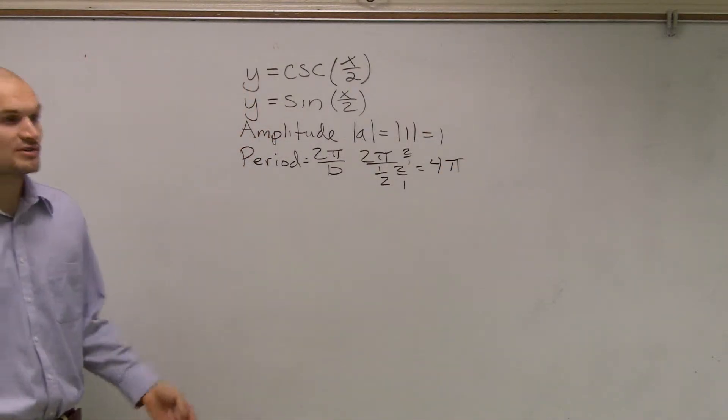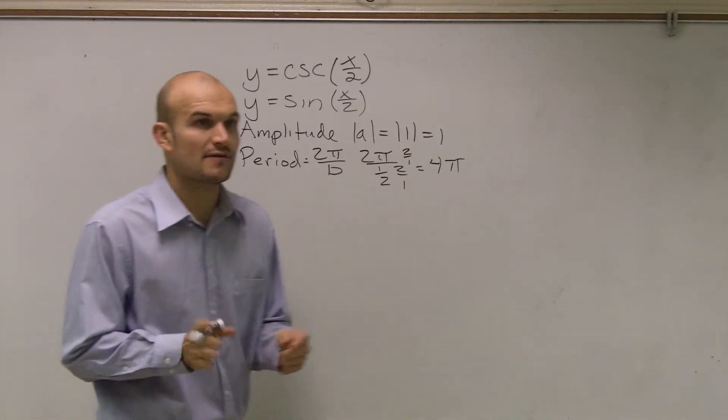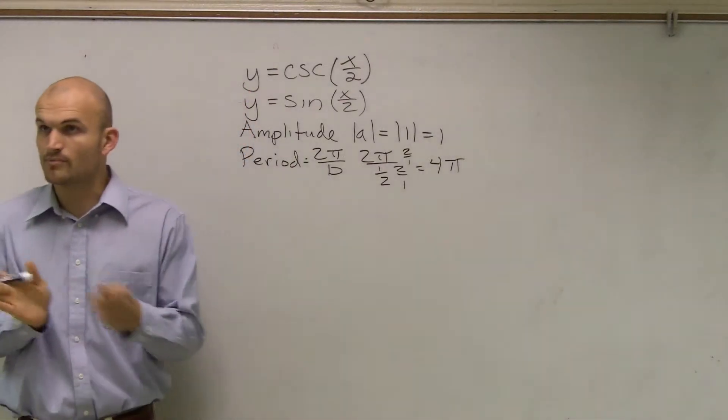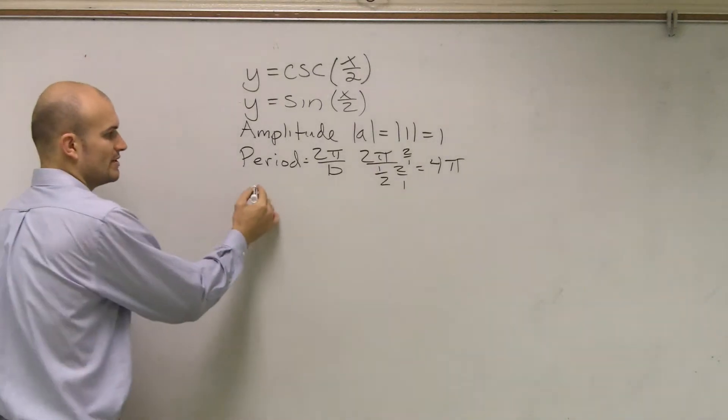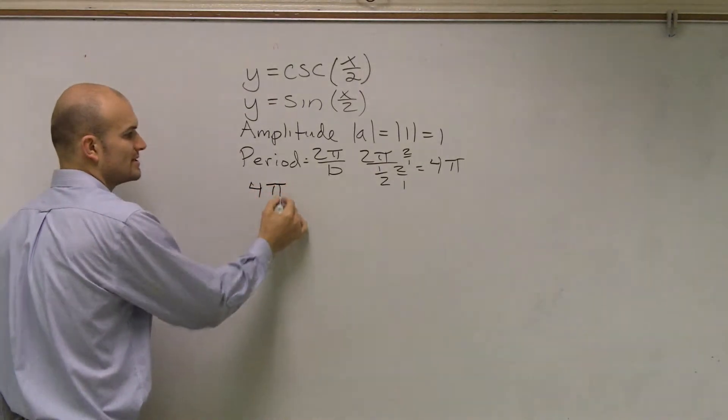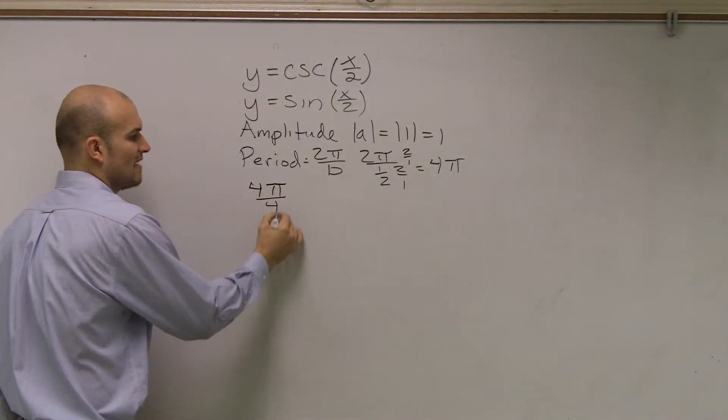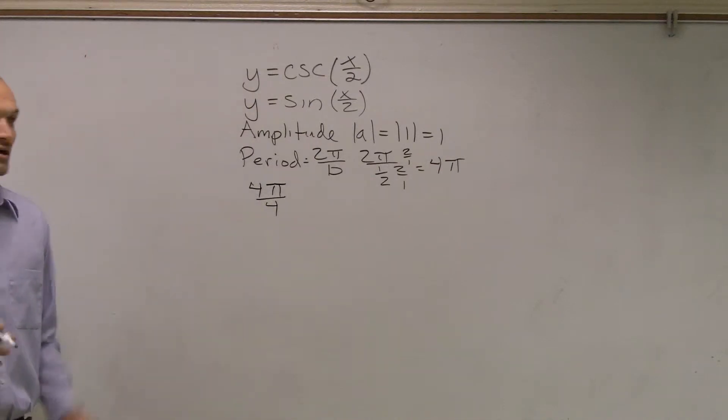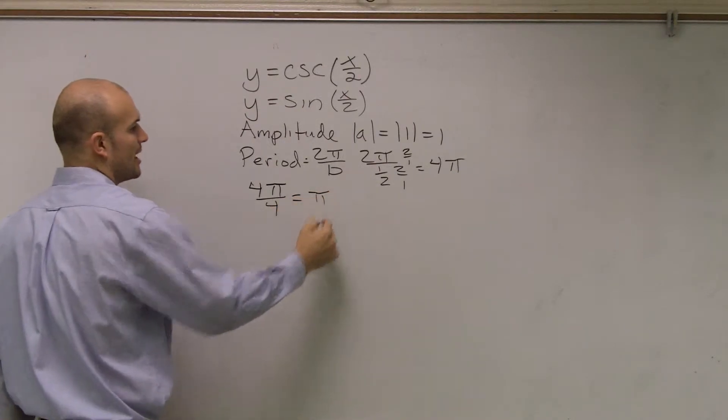Then, the next thing we want to do is make sure, remember, sine and cosine graph, we can break it up into 4 important points, or 4 important intervals. So we take our period, and we always divide it by 4. And that just helps us find out our important points for a graph. So 4π divided by 4 ends up giving us π.